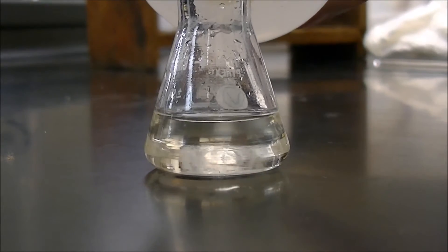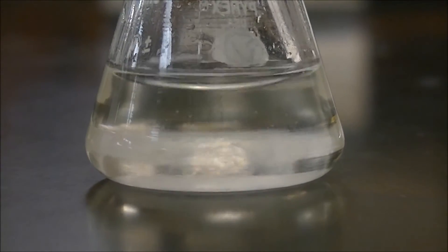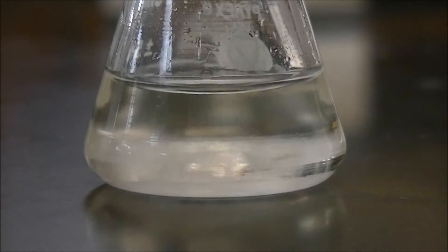Here you can see that ethyl-4-aminobenzoate is precipitating out of solution. To get all the product we can, we will add base until the pH is basic.